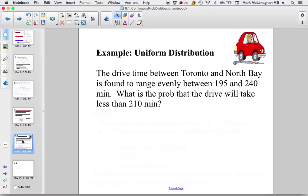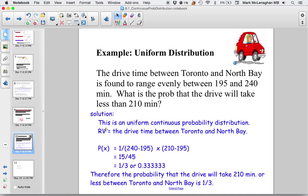Let's look at an example. The drive time between Toronto and North Bay is found to range evenly between 195-240 minutes. What is the probability that the drive will take less than 210 minutes? Since it's ranged evenly, we know that it's a uniform continuous probability distribution because it used the word evenly. The random variable is the drive time between Toronto and North Bay.